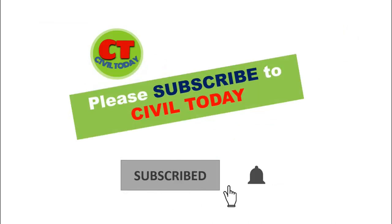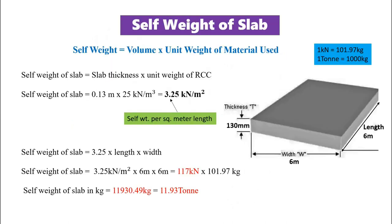If you are new to my channel please subscribe to CIVILtoday and support us. First is self weight of slab. Self weight is nothing but volume into unit weight of material used. To find the self weight of slab, multiply the thickness of slab with unit weight of material used. Here material used is RCC. The thickness of slab is taken as 130 mm, so 0.13 multiplied with unit weight of RCC, that is 25 — we will get this value from IS 875 part 1. We will get 3.25 kN per meter square as the self weight of slab per meter square.